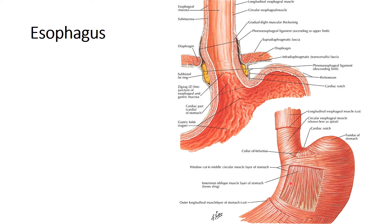In terms of lymphatic drainage, the lymphatics of the abdominal part of the esophagus drain into the left gastric lymph nodes, following the gut. The efferent vessels go mainly to the celiac lymph nodes.